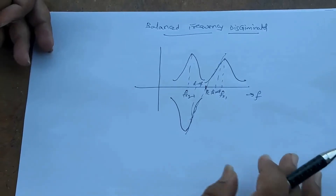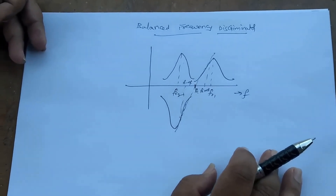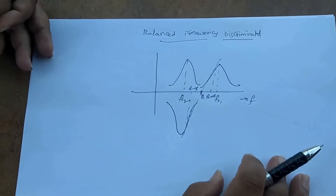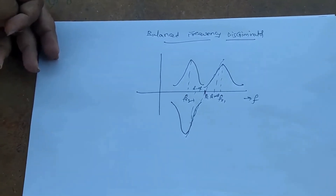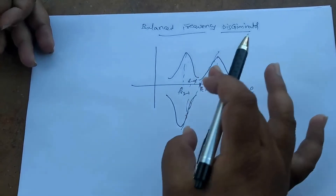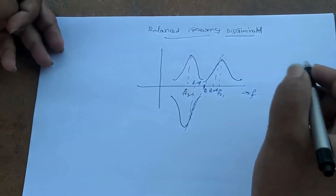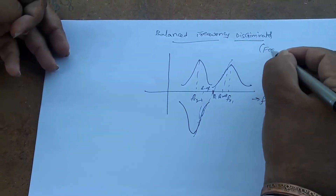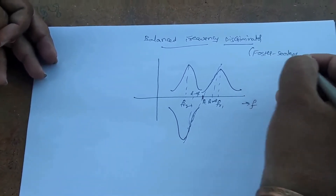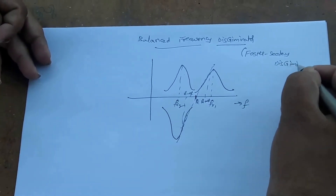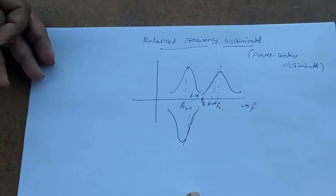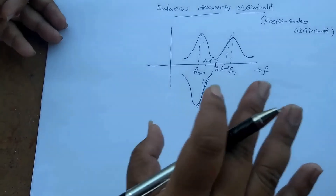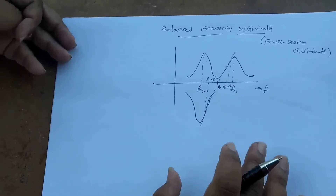The basic concept of frequency variations to amplitude variations, then recovering the modulating signal, is common to both. The extension of the dynamic range is the key concept of the balanced frequency discriminator. This balanced frequency discriminator is also called the Foster-Seeley discriminator. In examinations, they may ask you to explain the Foster-Seeley discriminator — it is the same as the balanced frequency discriminator. The circuit diagram for this process is the balanced frequency discriminator circuit.